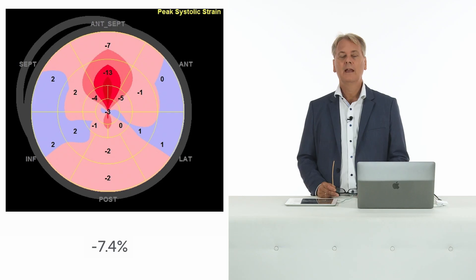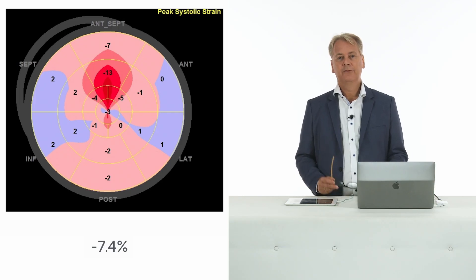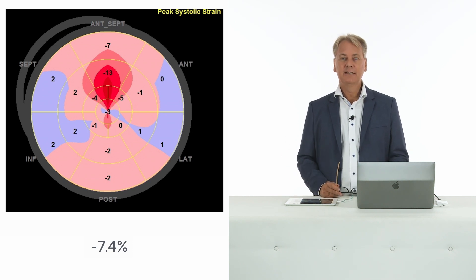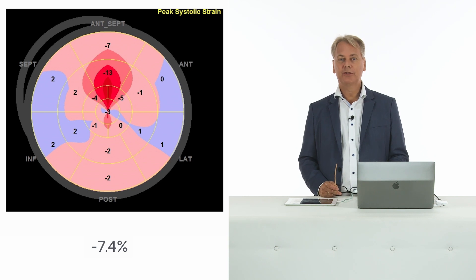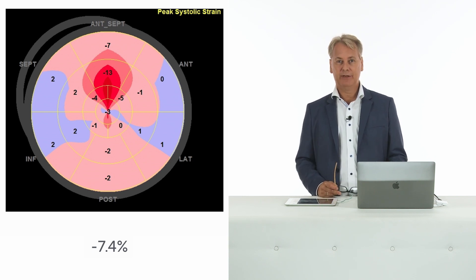So look out for apical sparing — the cherry on the cake — but also be aware that this phenomenon is not always specific for amyloid heart disease, at least in my opinion. And one other thing: frequently, especially in the end stages of the disease, you will see very markedly reduced strain patterns or strain values, as in this example here.